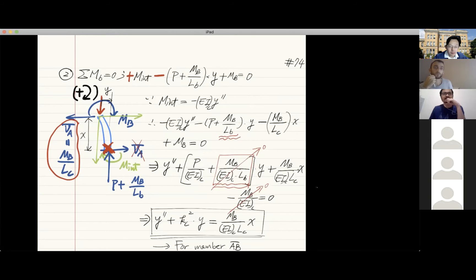But the moment produced by this P plus mb over Lb, this is the vertical force, so it will certainly produce negative moments. So this negative sign is correct.